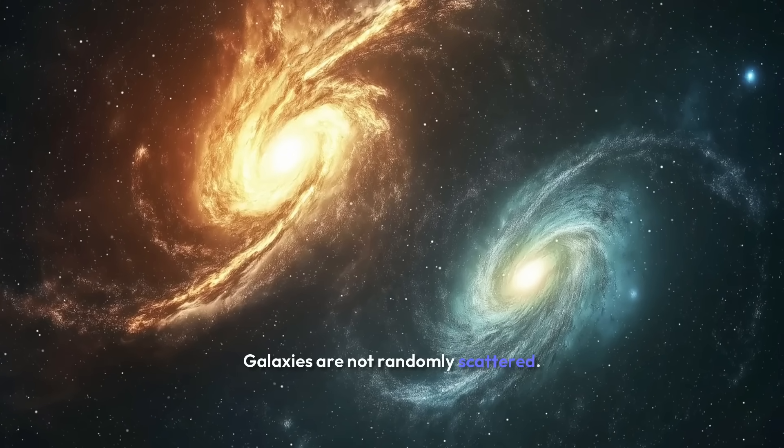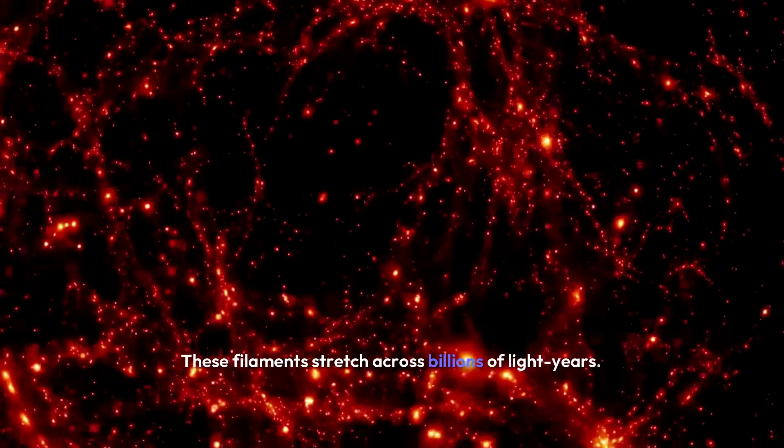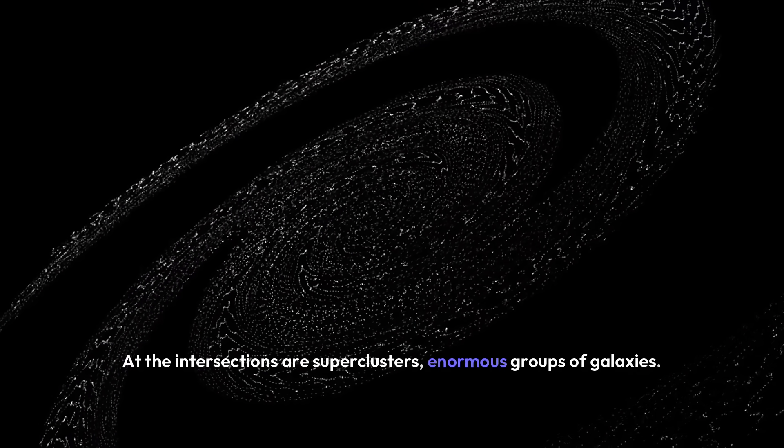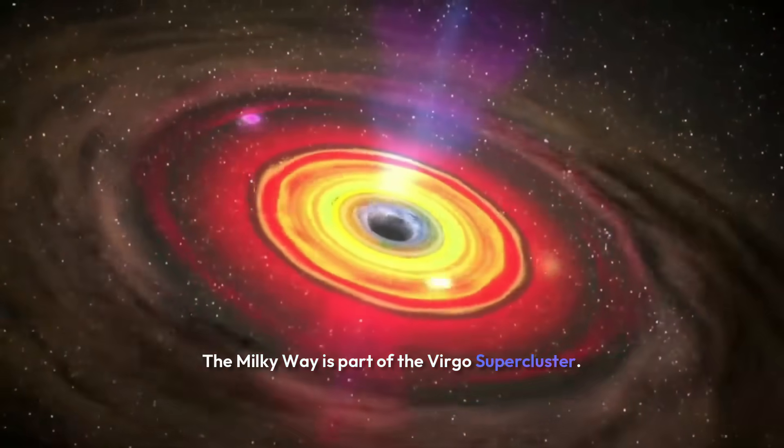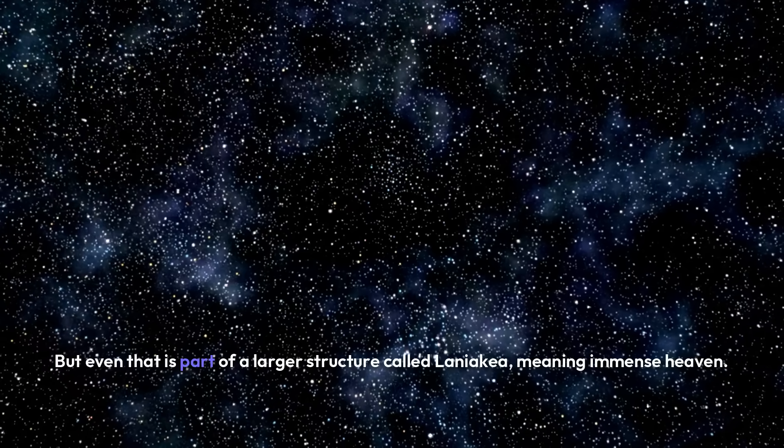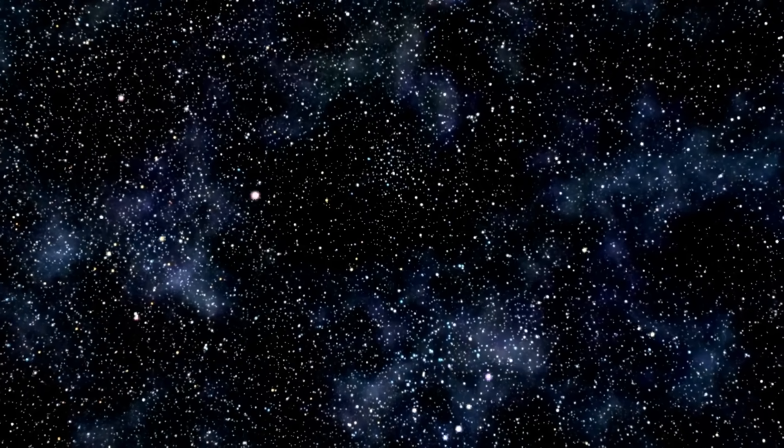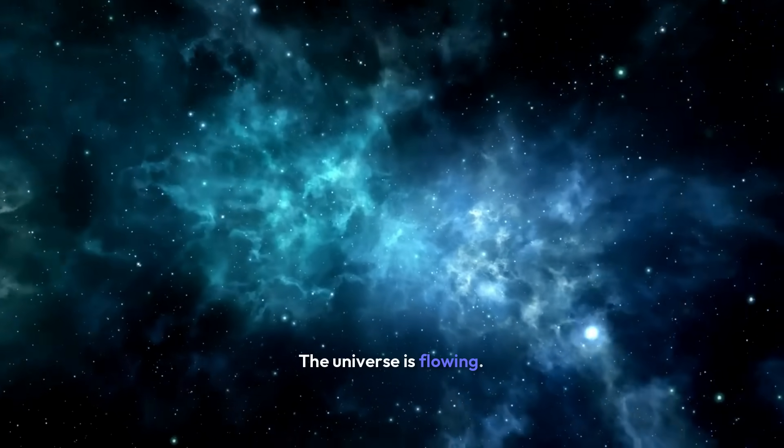Galaxies are not randomly scattered. They are arranged in filaments, forming a massive cosmic web. These filaments stretch across billions of light years. At the intersections are superclusters, enormous groups of galaxies. The Milky Way is part of the Virgo supercluster. But even that is part of a larger structure called Laniakea, meaning immense heaven. Galaxies move like rivers through gravity's pull. The universe is flowing.